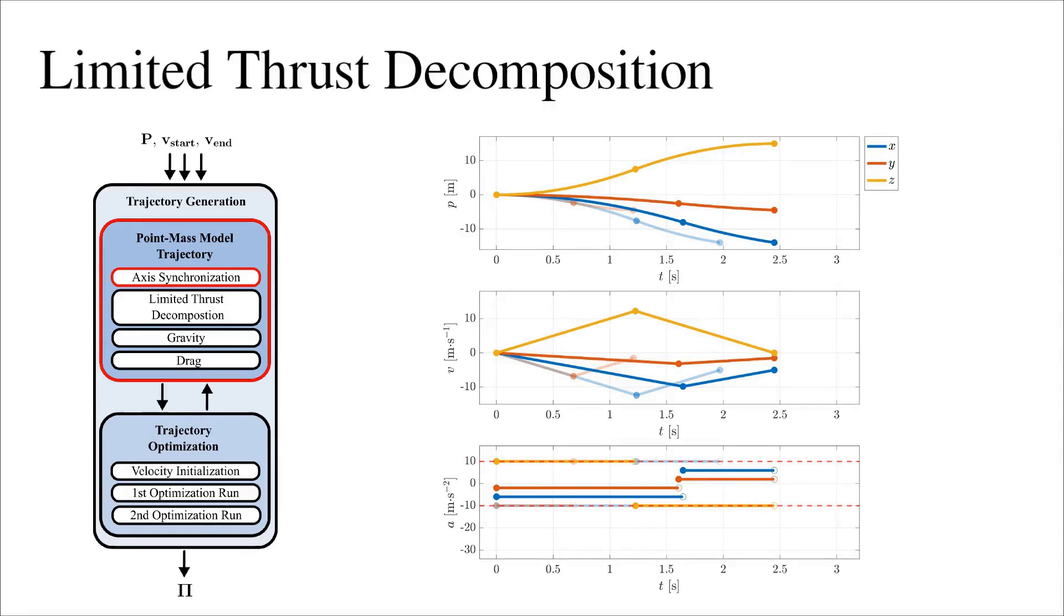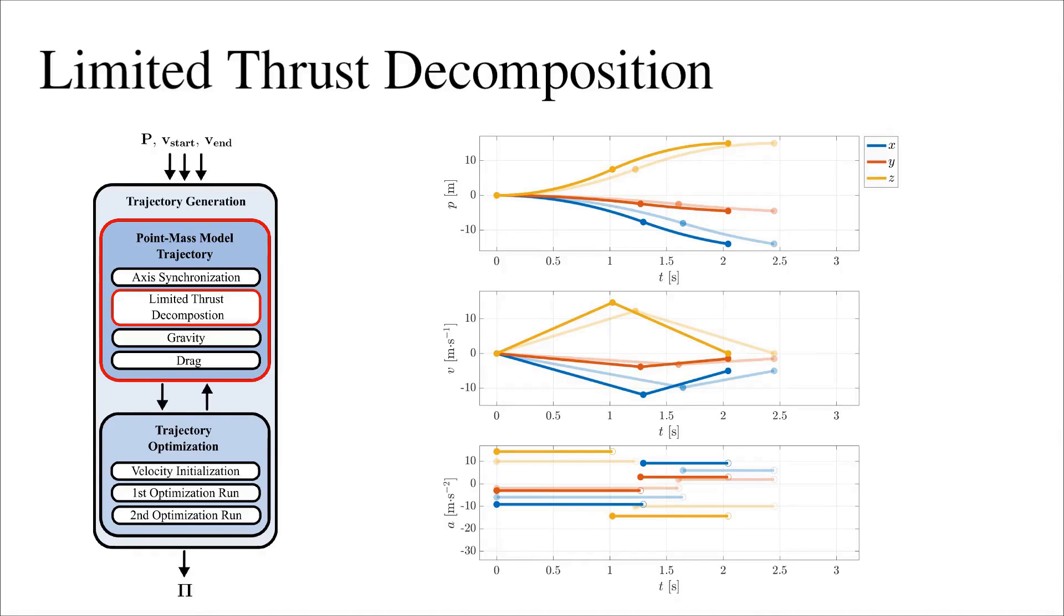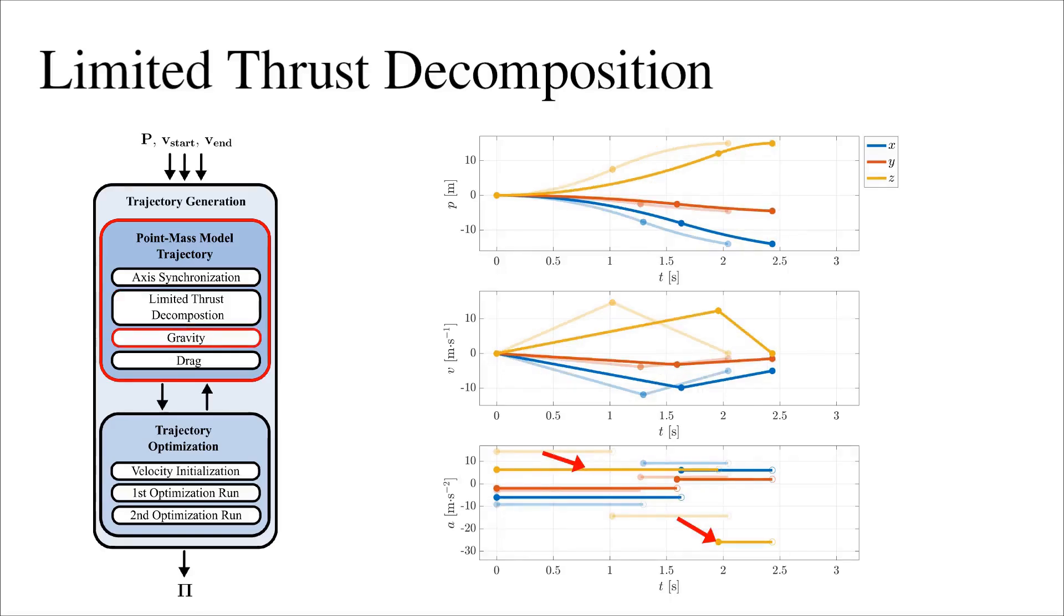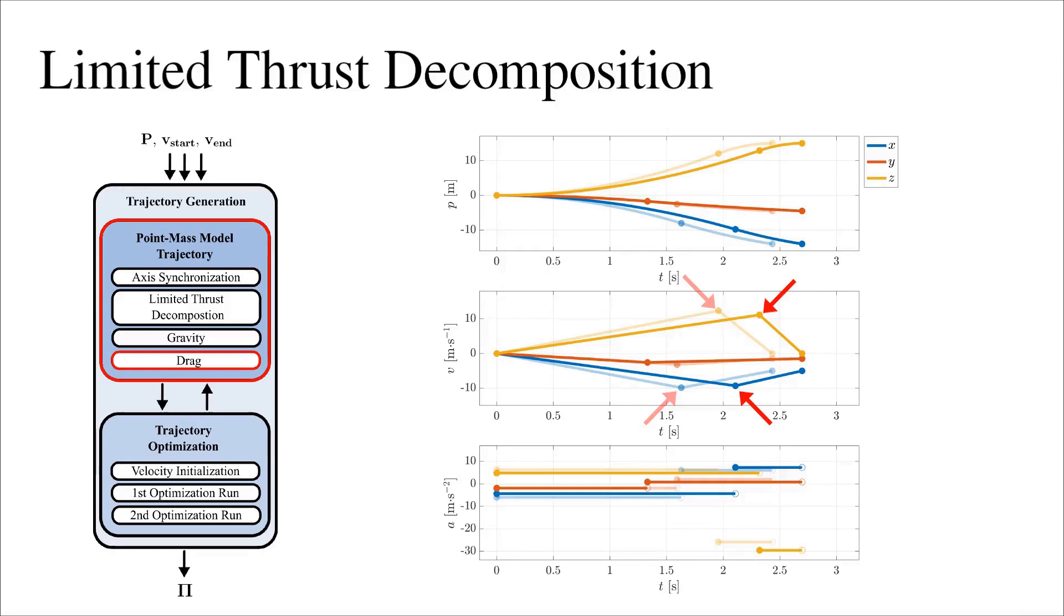To exploit the full actuation potential of a multi-rotor UAV, a novel limited thrust decomposition method is applied to iteratively and efficiently distribute per-axis acceleration limits. To account for real-world conditions and minimize tracking error in real-world flights, gravitational acceleration and a linear drag model are considered.